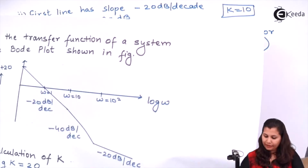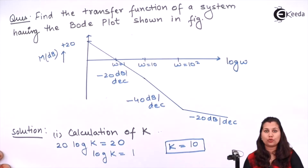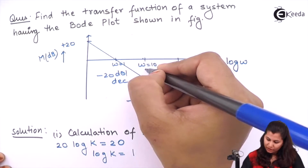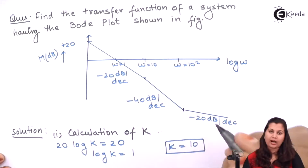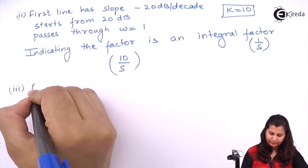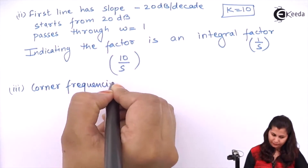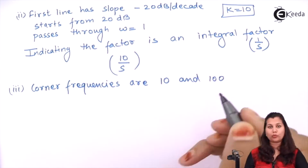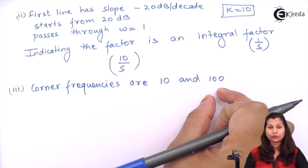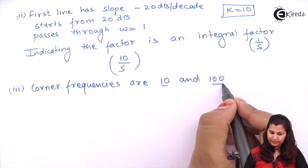Now we have the corner frequencies. Corner frequencies are the frequencies at which the slope of the magnitude plot is changing. The slope is changing at omega equals 10 and at omega equals 100. So the corner frequencies are 10 and 100, meaning there are two more factors due to these two corner frequencies.